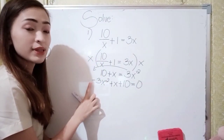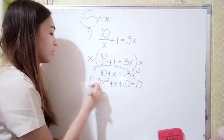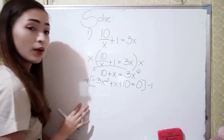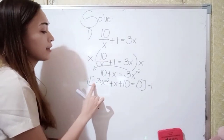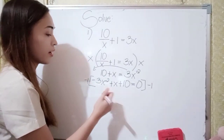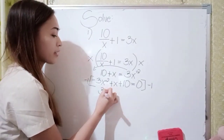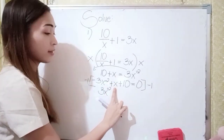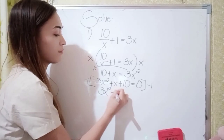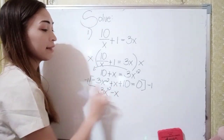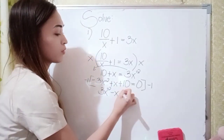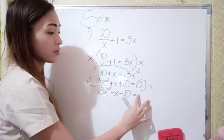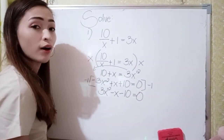To remove the negative sign, let's multiply by negative 1. Negative 1 times negative 3x squared becomes positive 3x squared. Negative 1 times positive x becomes negative x. Negative 1 times positive 10 becomes negative 10, equals 0.